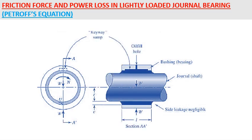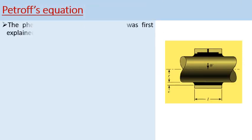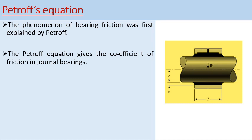From the figure, we have a shaft or a journal of diameter small d, which is surrounded by a bearing or bushing, and the load acting is denoted by w. Petroff's equation basically gives us the coefficient of friction in the case of lightly loaded journal bearings, and this phenomenon of bearing friction was first explained by Petroff.